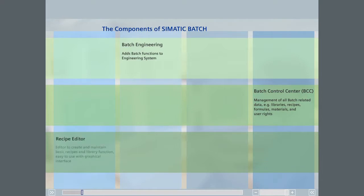The Recipe Editor provides a graphic user interface for simple, intuitive creation and modification of master recipes and library operations. Recipes are built using the recipe building blocks developed during the configuration of the process hierarchy in Simatic Manager. The Batch Recipe Editor can be started from the Microsoft Start button or from Batch CC, and is installed and operated on the batch clients you want to use to create and administer recipes.